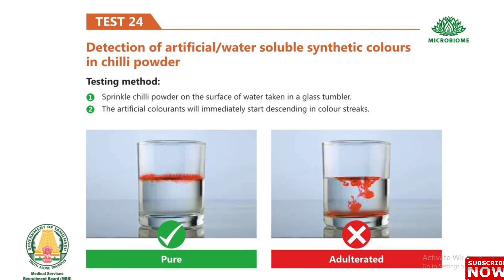Test 24: Detection of artificial water-soluble synthetic colors in chili powder. Sprinkle chili powder on the surface of water in a glass tumbler. The artificial colorants will immediately start descending in color streaks.